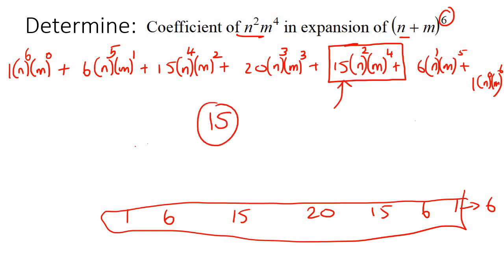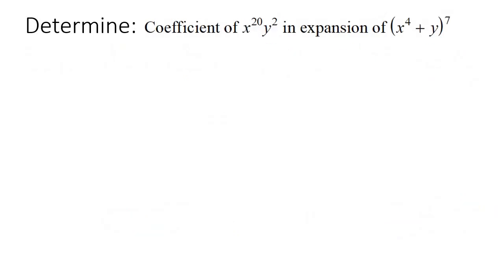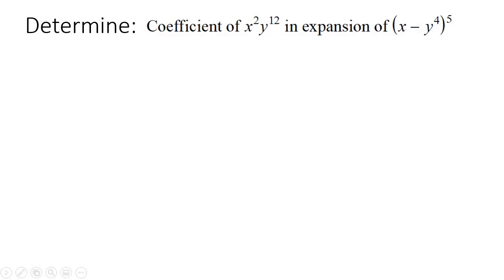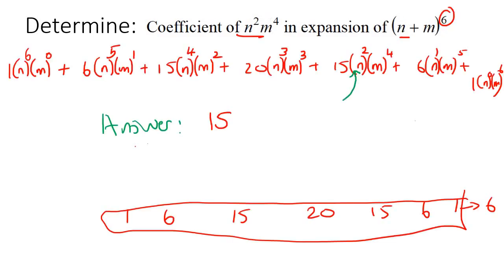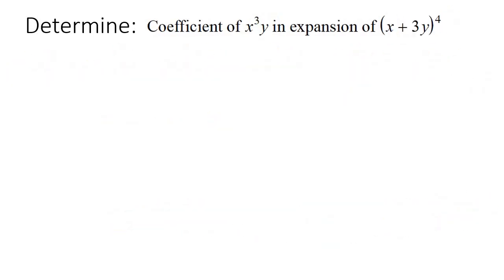If there were other numbers inside here, they would combine with that 15, so your coefficient would be something different. But these n's and m's aren't going to change the 15. The answer for this question is 15. Now we're going to do three more examples.